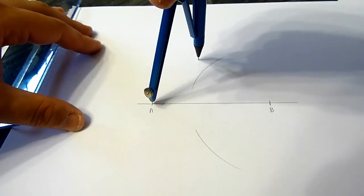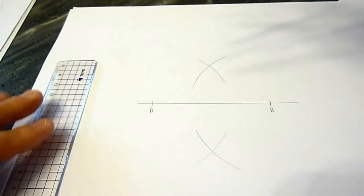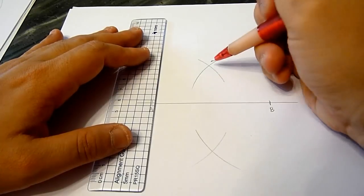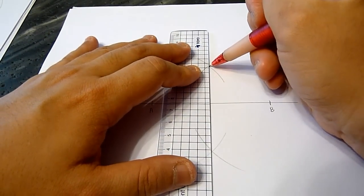By not changing the length of the two arms, we mark another pair of arcs. And now, we join the intersection points of the pairs of arcs together.